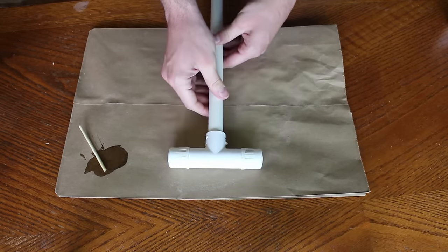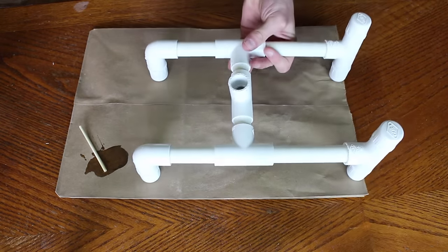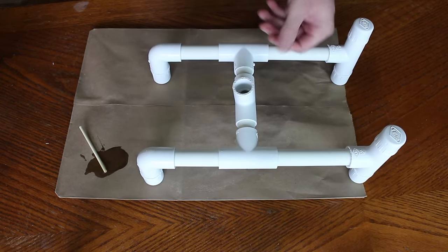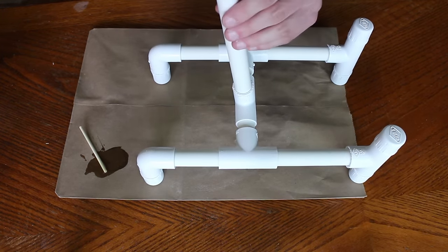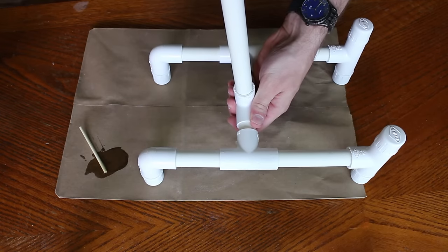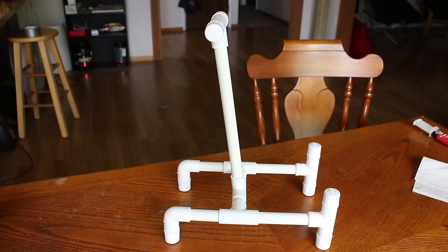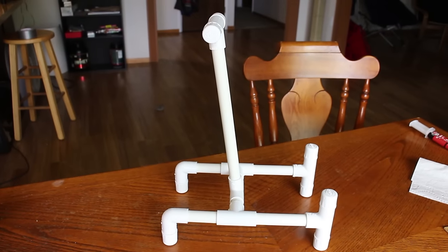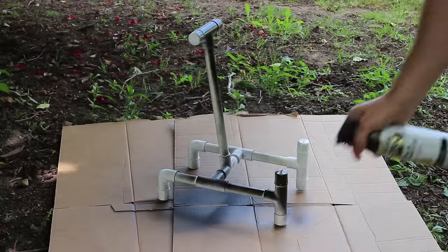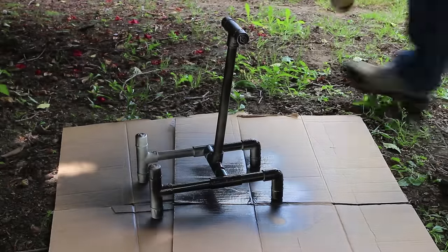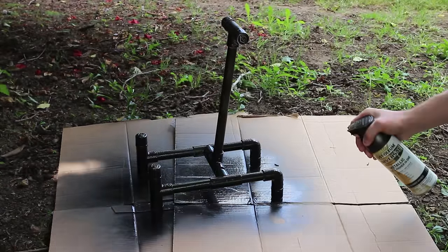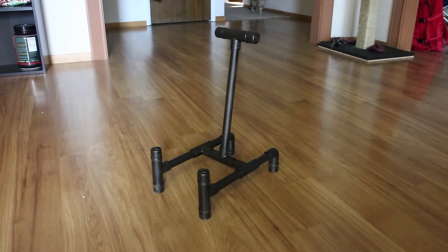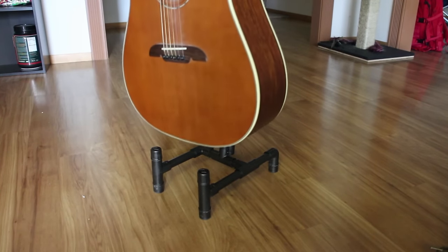Finally we're going to take this stand and place it into the base. Just press it right in. You should have something like this when you're all done. I decided to paint mine with some black metallic spray paint. That way it doesn't look like that plain white PVC. Now that it's dry I have a nice inexpensive guitar stand.